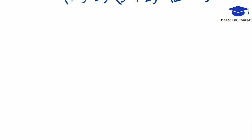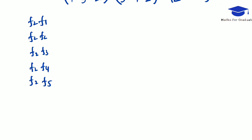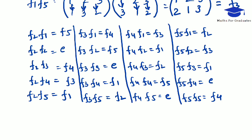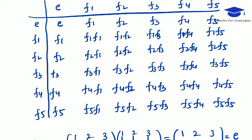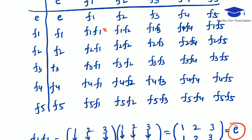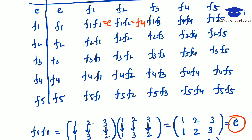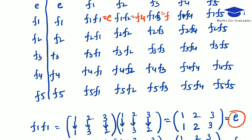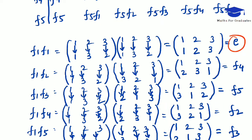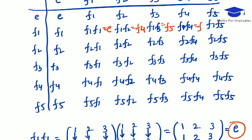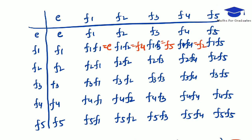Similarly, we can find the products for F2∘F1, F2∘F2, F2∘F3, F2∘F4, and F2∘F5, and so on for the remaining elements. Putting these values into the Cayley table: F1∘F1 is E, F1∘F2 is F4, F1∘F3 is F5, F1∘F4 is F2, and F1∘F5 is F3. This is the complete Cayley table.